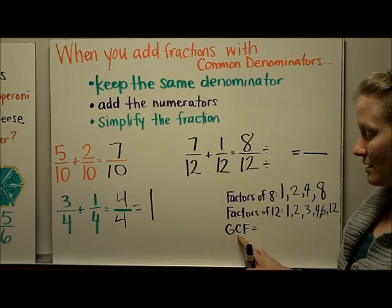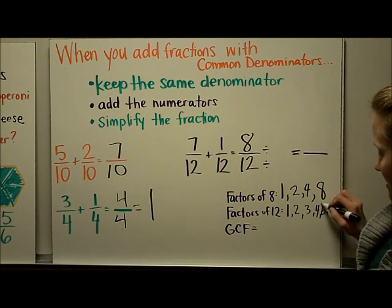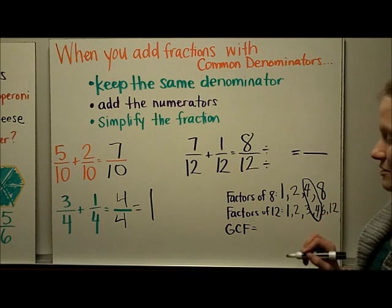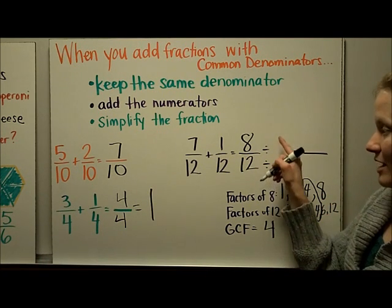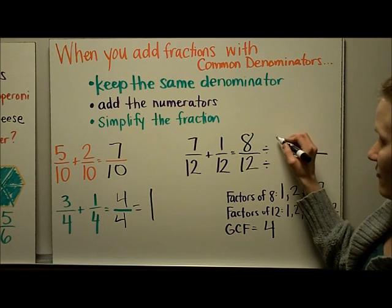And I want to find the greatest one that they have in common. And I can see here that the greatest common factor of 8 and 12 is 4. So I'm going to divide my numerator and my denominator by 4.